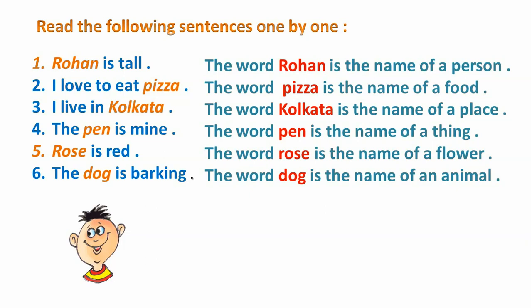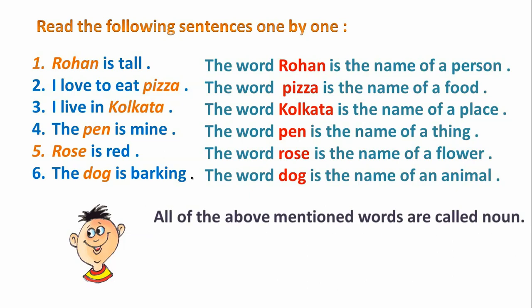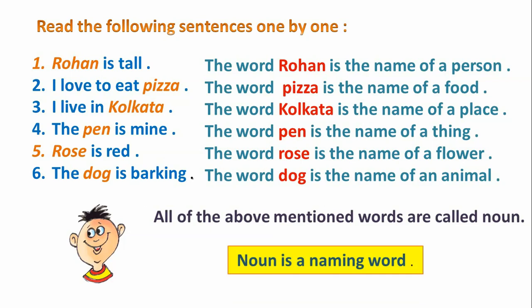In the fourth sentence, the pen is mine — the word pen is the name of a thing. The word rose is the name of a flower. So all of the above mentioned words are called noun. In short, noun is a naming word.